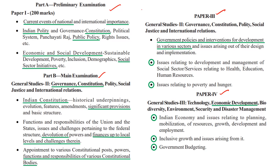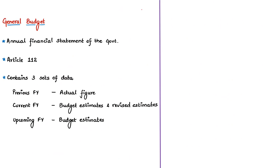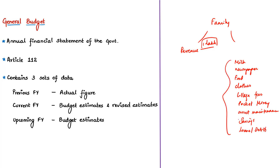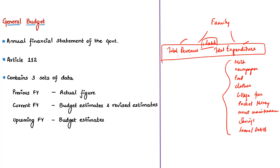First consider a small unit — for example, your own family. Assume that your mother and father are working or doing business and they get some revenue every month, for example one lakh rupees. There will be daily requirements like purchasing milk and newspaper, monthly requirements like food and clothes, college fees, pocket money, maintaining assets, savings, and paying loans. Together all these constitute the expenditure of your parents. This calculation of total revenue and expenditure for a particular time period is what is called a family budget.